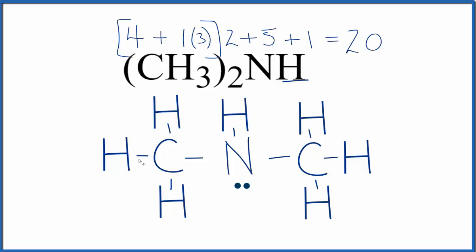Each atom has an octet. Hydrogens only need two electrons to have their outer shell full, so the hydrogens are good too. This is the Lewis structure for dimethylamine, (CH3)2NH.